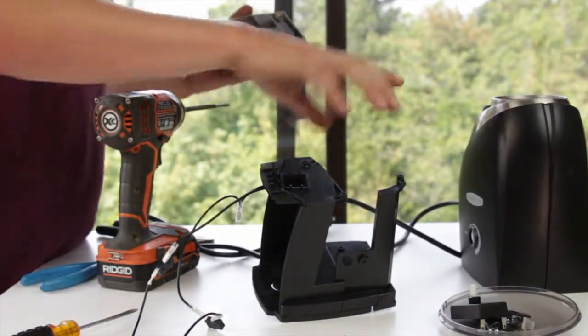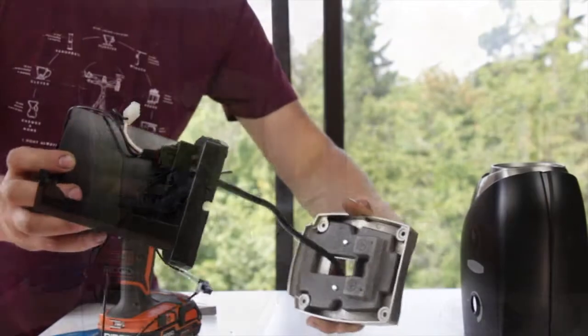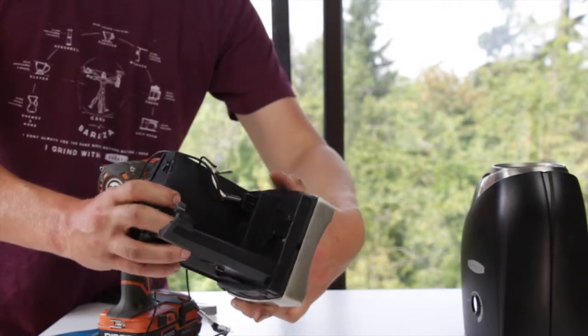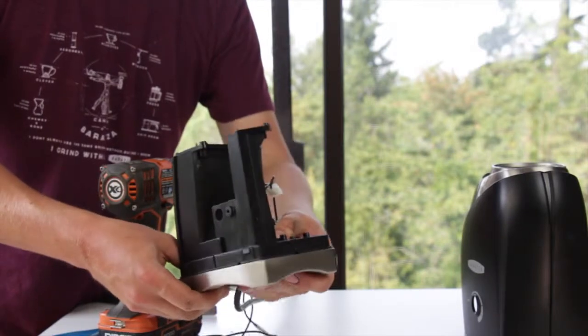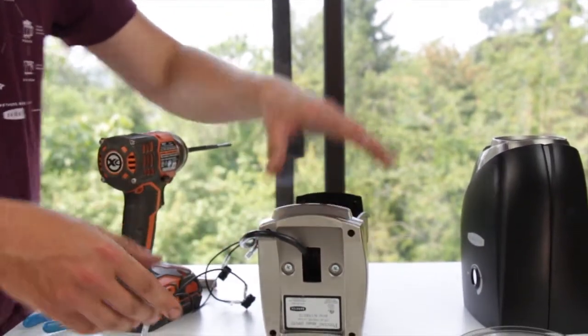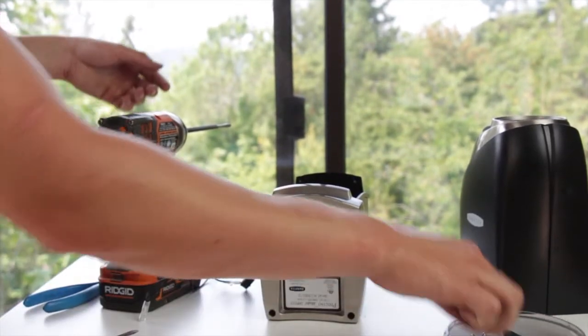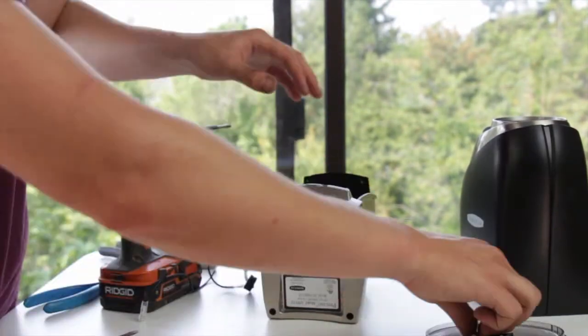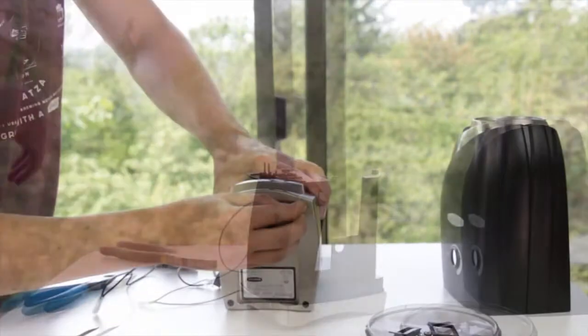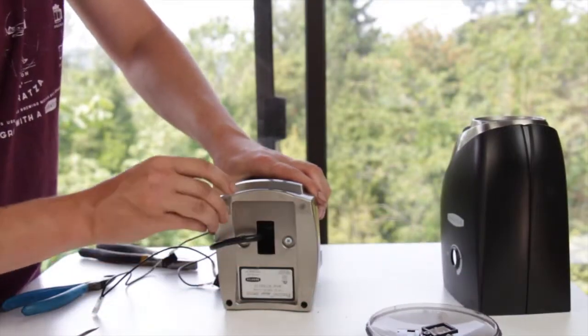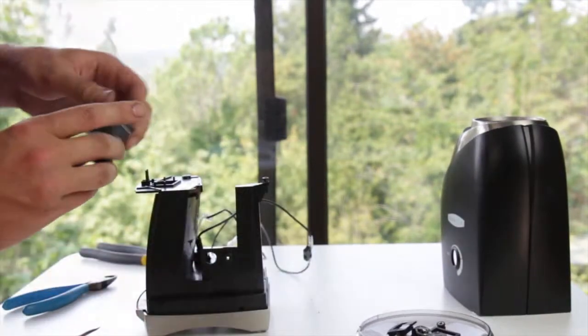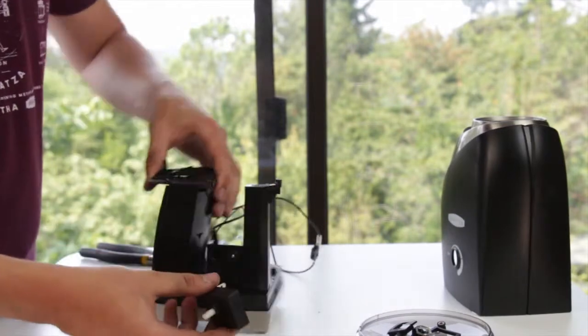Next, I am going to reinstall the metal base. Feed the cord through the base and get the base into position on the bottom of the chassis. Once in position, reinsert the four screws. Don't forget to press your feet back into the holes after you have the screws installed.